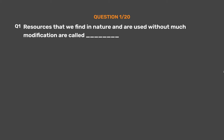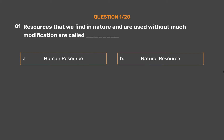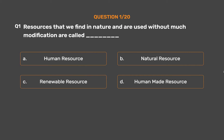Question number 1. Resources that we find in nature and are used without much modification are called ___. Option A: Human resource. Option B: Natural resource. Option C: Renewable resource. Option D: Human-made resource.